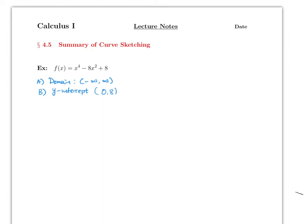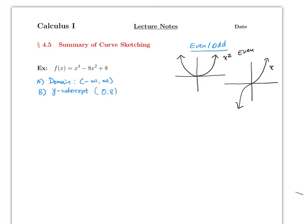Then you have to check if the function is even or odd. From pre-calculus, an even function has even exponents — something like x⁴ is an even function. Something like x³ is considered an odd function. If f(−x) = f(x), the function is even. If f(−x) = −f(x), the function is odd. An even function is symmetrical on the y-axis — if you rotate it around the y-axis you end up with the same shape.